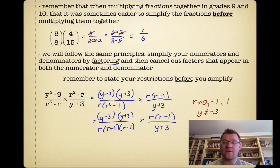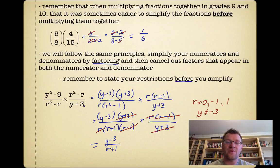Now that we've stated our restrictions, or what we call our non-permissible values, we can cancel things out. We have (y + 3) here and (y + 3) there—remember you can only cancel out entire factors. You can't just cancel out this y with a y somewhere over there. We have an r and r, so that cancels out. We have (r - 1) and (r - 1). In the end, we are left with just (y - 3)/(r + 1), and that's as simple as this expression gets.